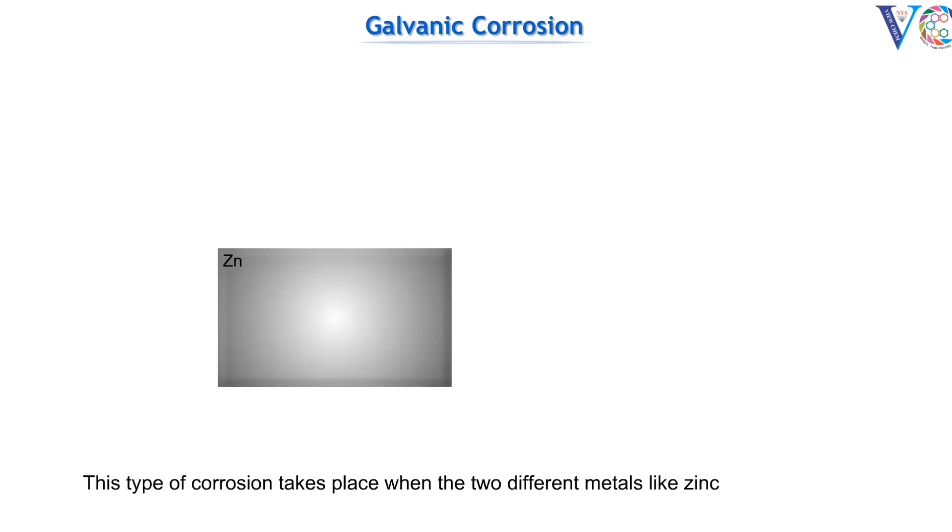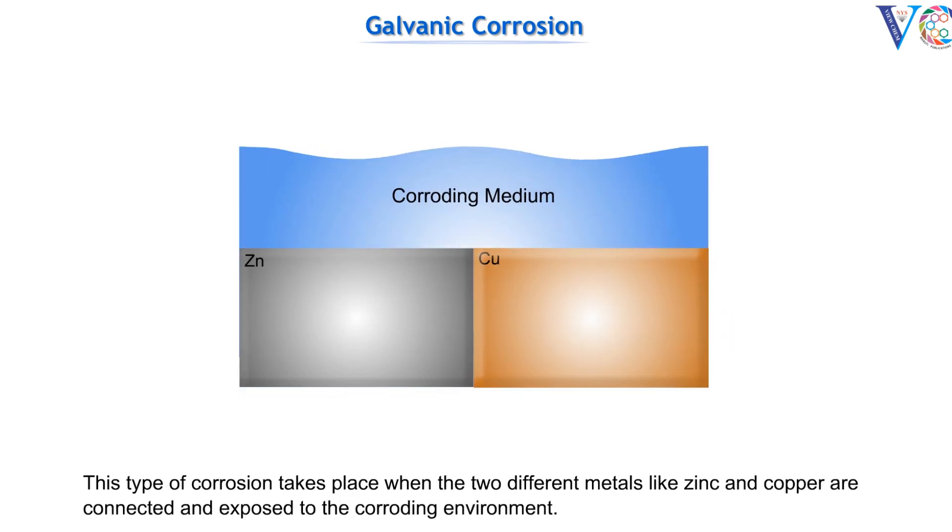Now, let us visualize Galvanic Corrosion. This type of corrosion takes place when two different metals like zinc and copper are connected and exposed to the corroding environment.